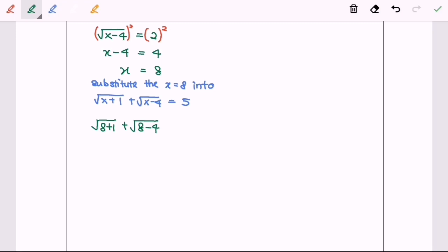So 8 plus 1, we have 9. Square root of 9, we will have 3. Plus with 8 minus 4, we have 4. Square root of 4, we will have 2, and that will equal 5. So the left-hand side and the right-hand side are equal, meaning that the value x equals 8 satisfies the equation.